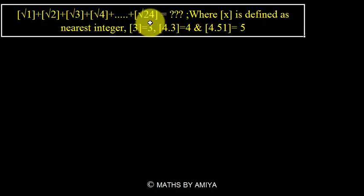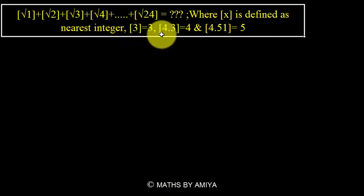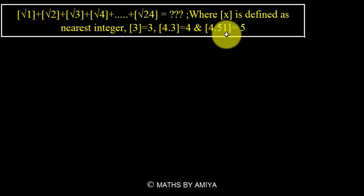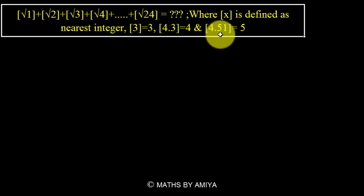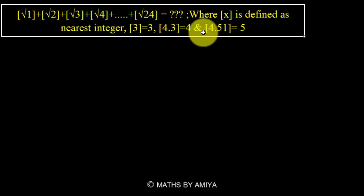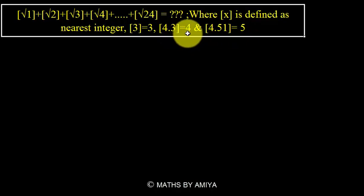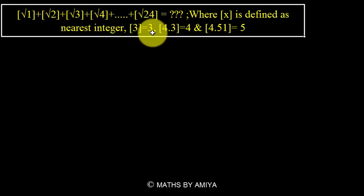Here bracket x is defined as the nearest integer. For example, bracket of 3 is 3, bracket of 4.3 is 4, and bracket of 4.51 is 5. This is not the greatest integer but the nearest integer. If the decimal value is more than 0.5, convert it to the next higher integer. If the decimal value is less than 0.5, convert it to the lower integer.